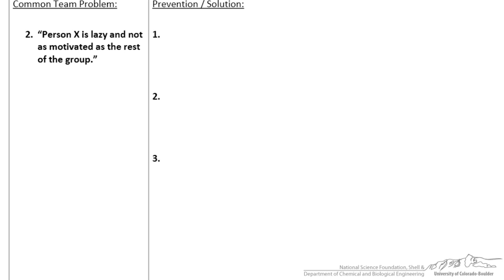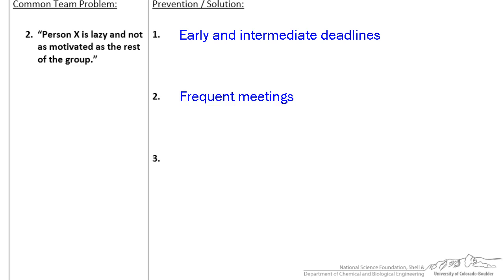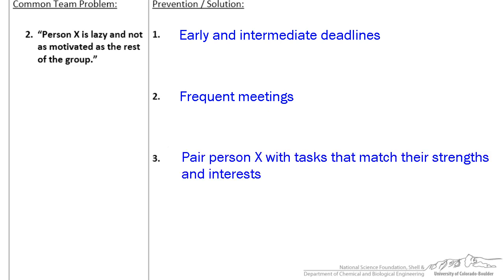The next common problem relates to the first one: person X is lazy and not as motivated as the rest of the group. To prevent this, set early and intermediate deadlines to make sure the individual is staying on task. Have frequent meetings to check on their progress and always make sure everyone shows the work they've completed. Lastly, work with this teammate to match them with tasks that leverage their strengths and interests. People are a lot more likely to do well if they're doing something they enjoy and have experience with. If people feel they're making a unique contribution, then they're usually more motivated to do a good job.